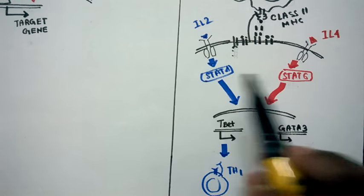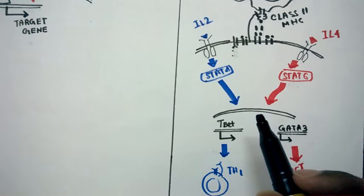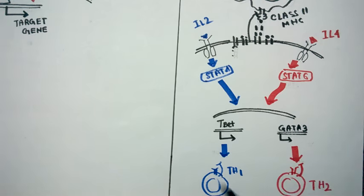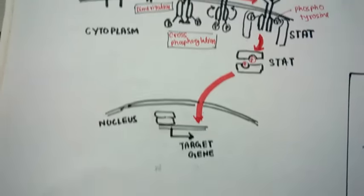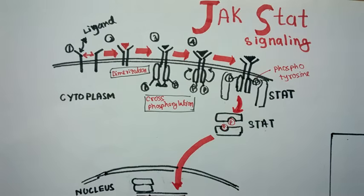This helps in the process of T cell differentiation. In this way, JAK-STAT signaling is very important in the context of cell signaling. Hope you enjoyed the video. Please like and subscribe. Thank you.